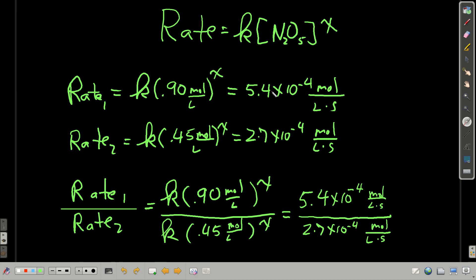But also we know what the rates are because we got the tangents to the curve and the slopes of the tangents. 5.4 times 10 to the minus 4th moles per liter second, and 2.7 times 10 to the minus 4th moles per liter per second. So if we take the ratio of rate 1, rate at 0.90 moles per liter over rate 2, plugging in here and get this.